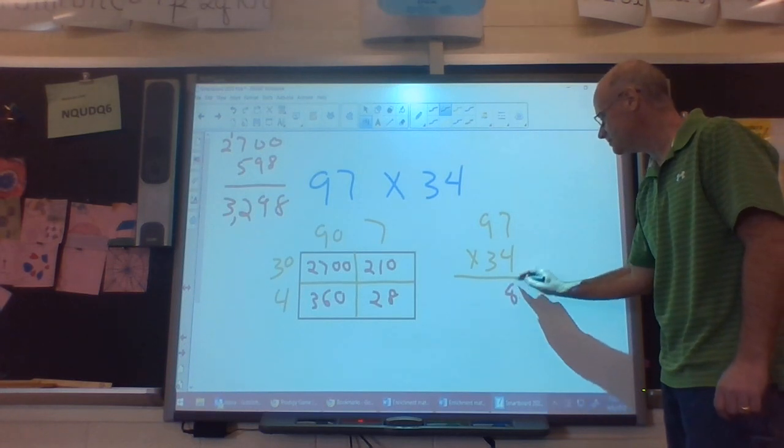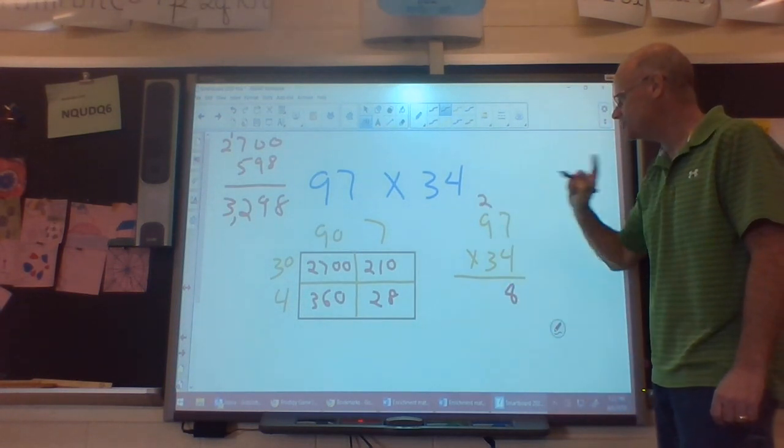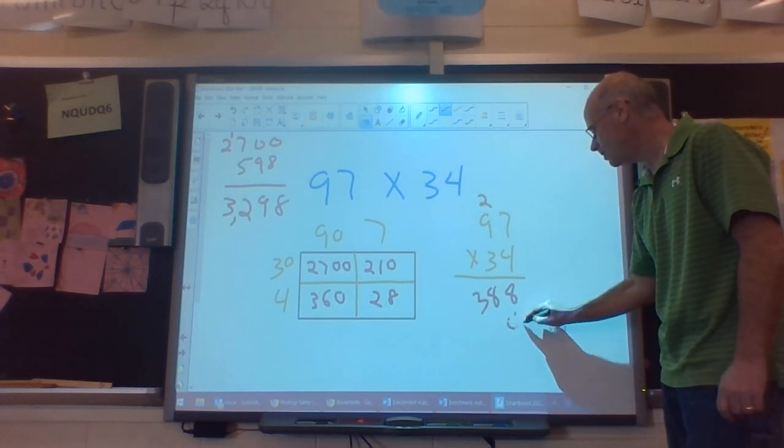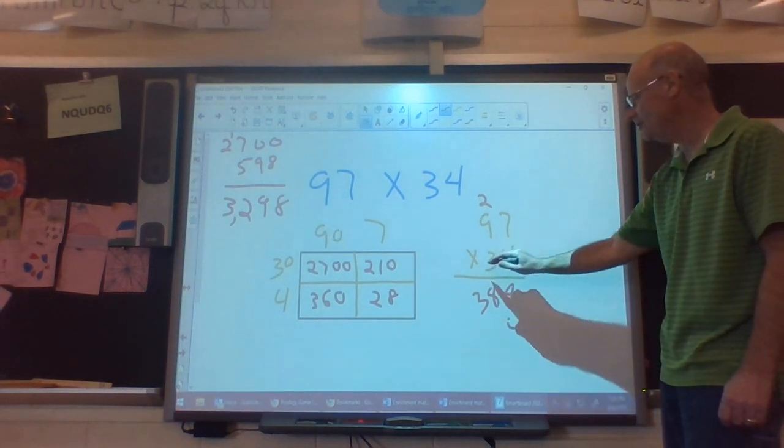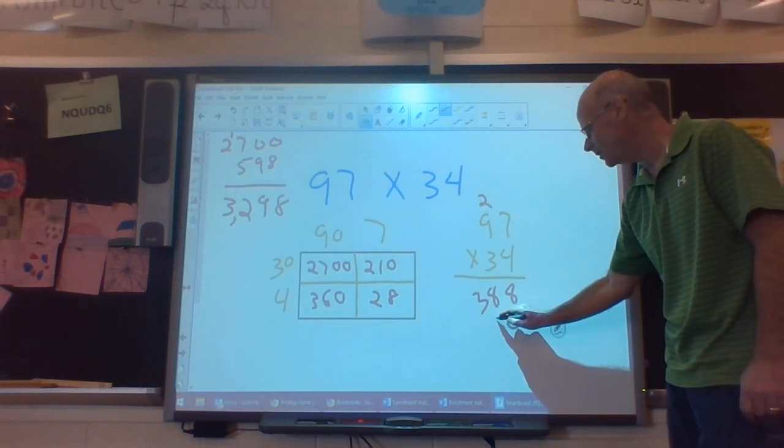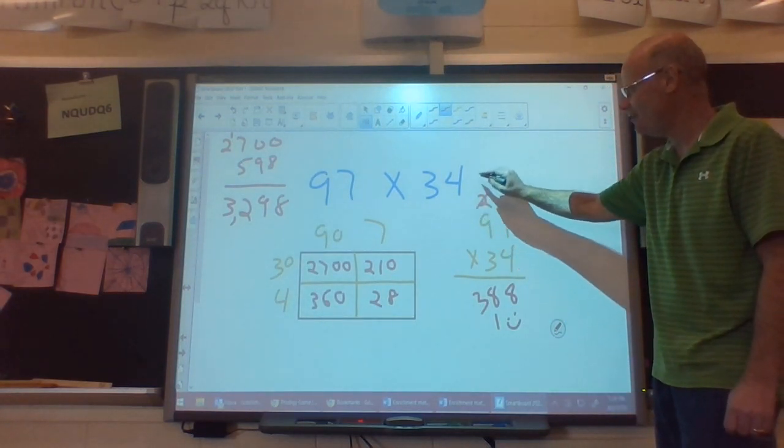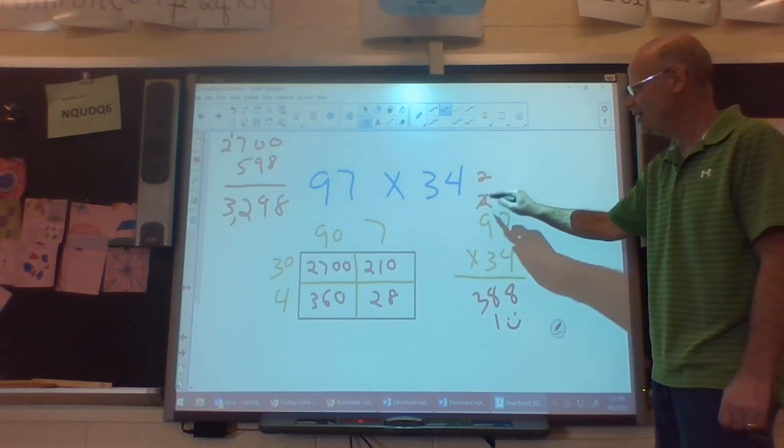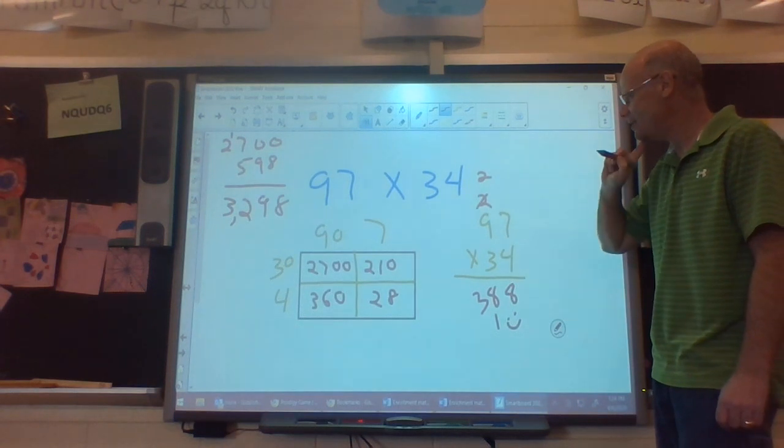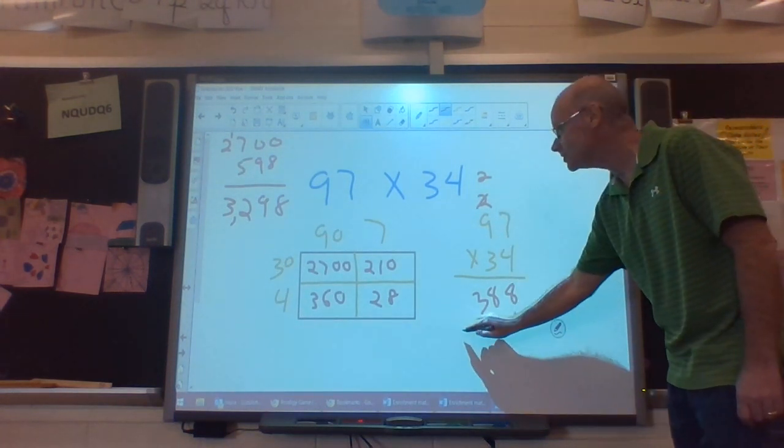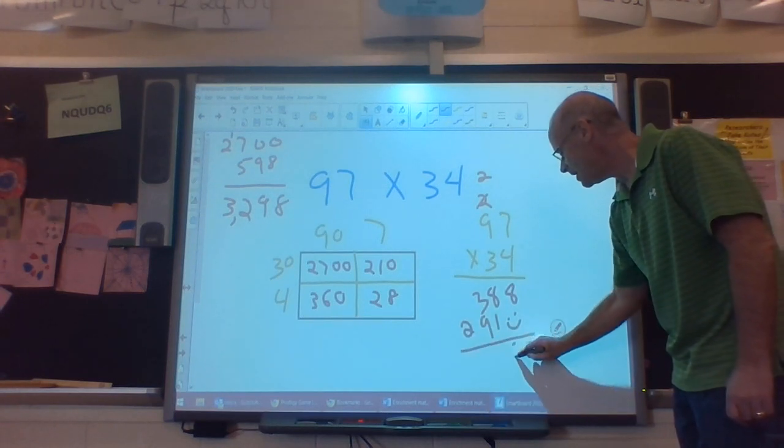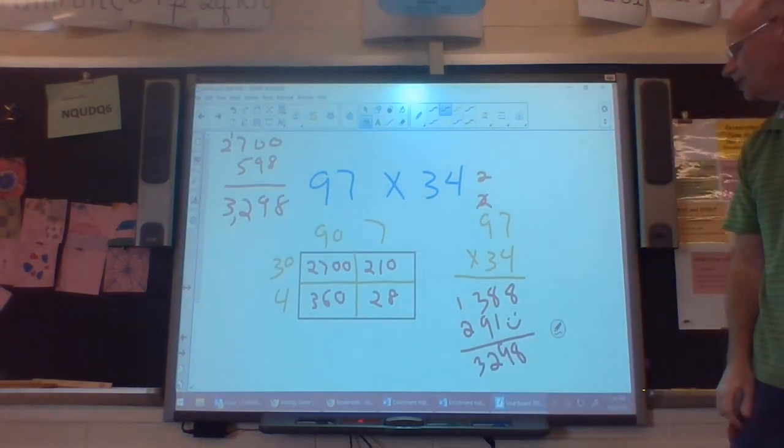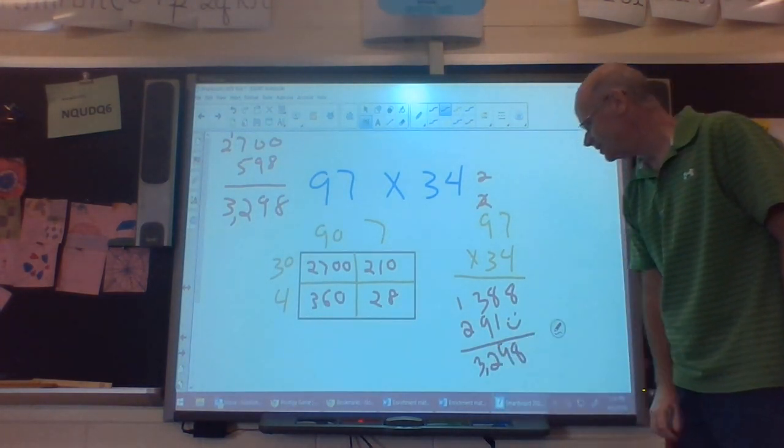Let's see if I have the same thing as standard algorithm. 4 times 7 is 28. Carry my 2. 4 times 9 is 36, plus 2 is 38. I'm going to put down my Waldo, because I know I'm multiplying by a 10, not a 1. 3 times 7 is 21. Put down my 1s. Carry my 10s. You notice I crossed this one off because that was from multiplying by 4. And I had to carry my new one. 3 times 9 is 27, plus 2 is 29. So if I add these, I get 32. Same answer. Not so hard.